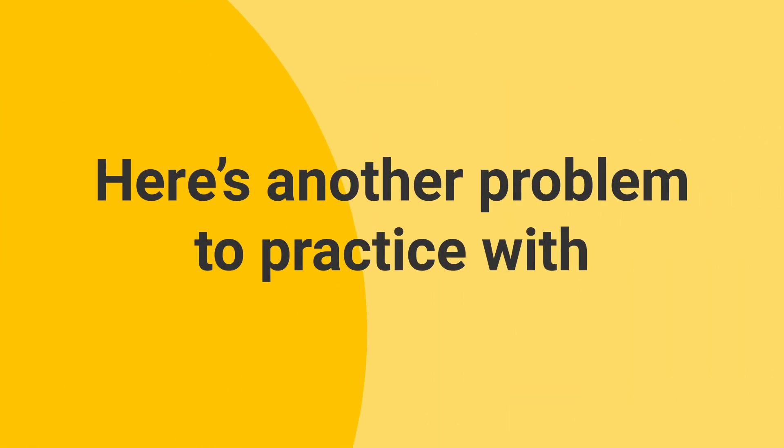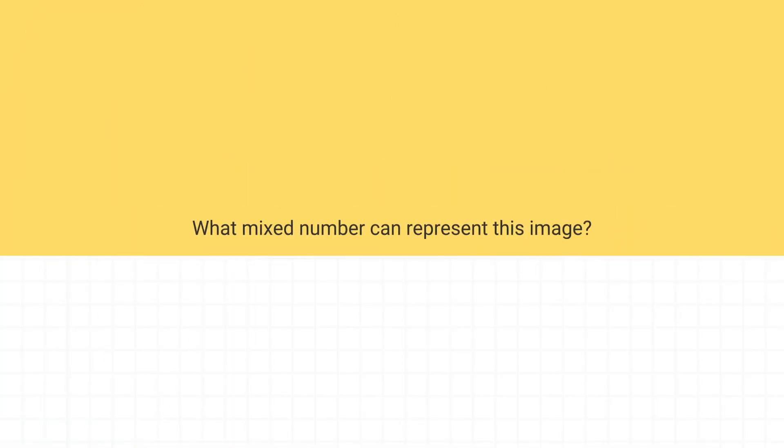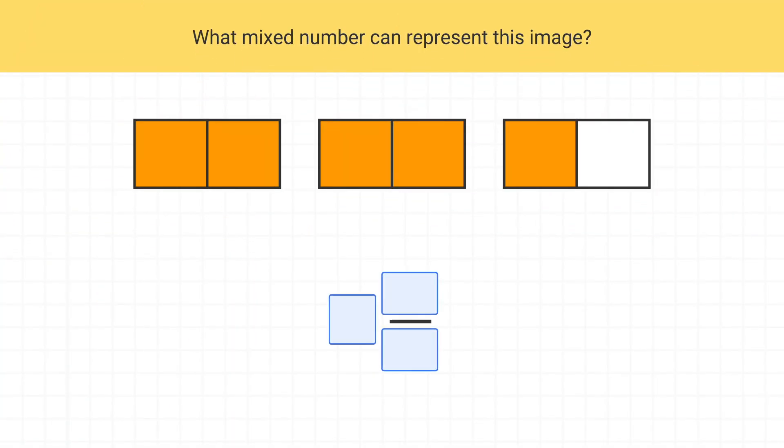Here's another problem to practice with. What mixed number can represent this image? Now even though these models might look different than the pizza examples, we follow the exact same process. First, how many models are fully shaded? We can see that two models are fully shaded, so we write two as our whole number. Then what fraction is this model? One-half of this model is shaded, so we can write the fraction one-half into our mixed number. This image is two and one-half.